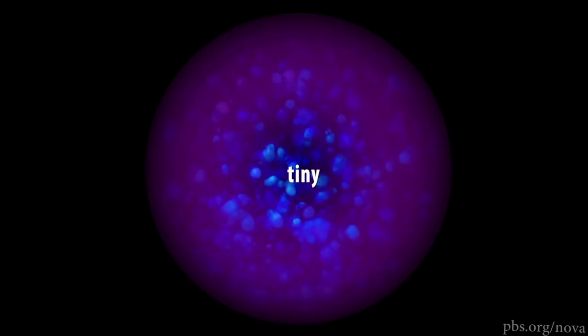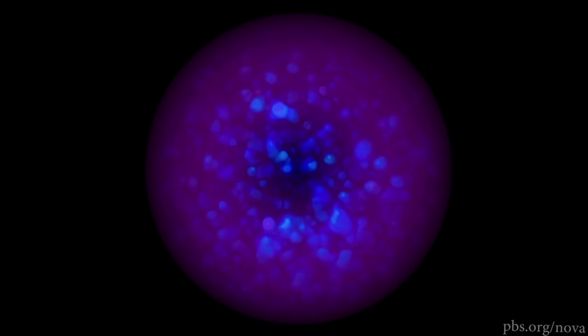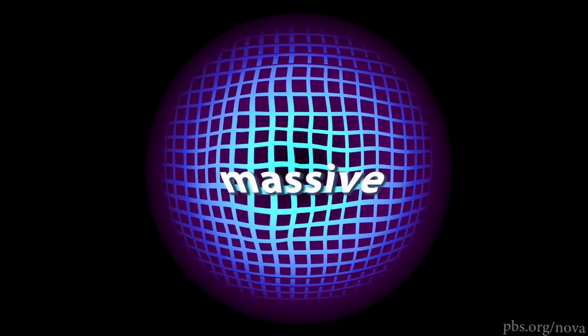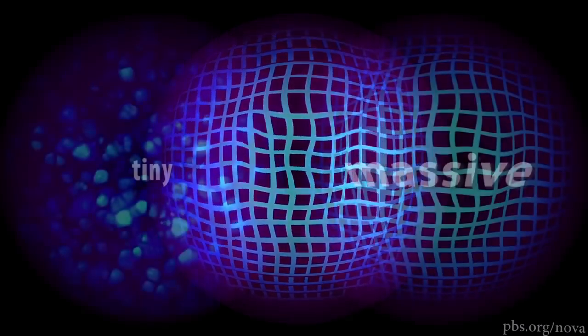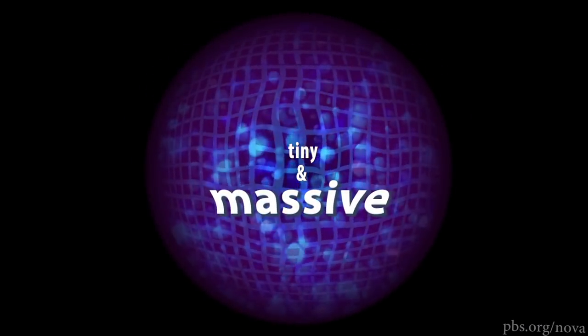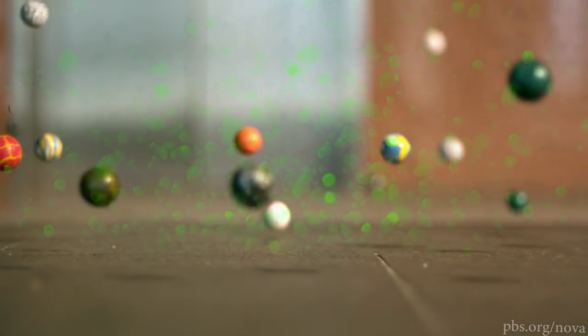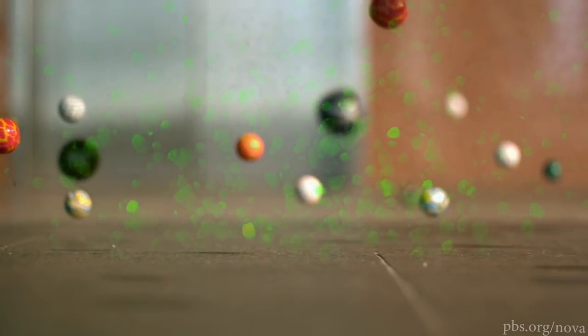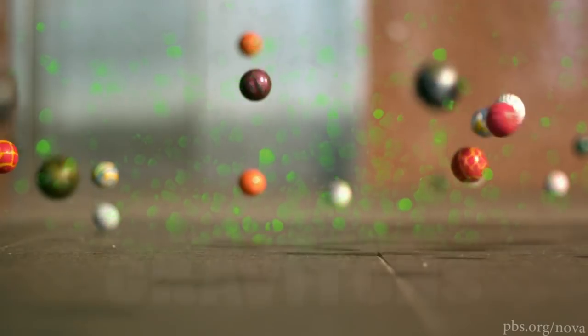For decades, physicists have wondered what laws of nature would dominate here. The tiny size of the universe meant the seething, ethereal world of quantum particles should be at play, but the immense mass meant the space-bending world of gravity should also be at work. So physicists merged these worlds and came up with a strange idea. They proposed that gravity is actually made of quantum particles, which they called gravitons.